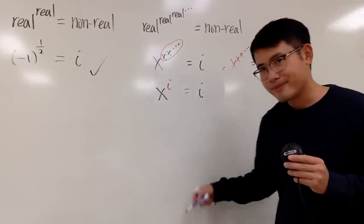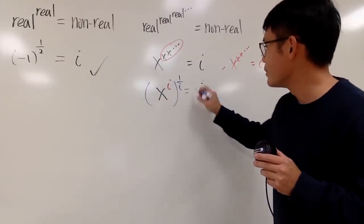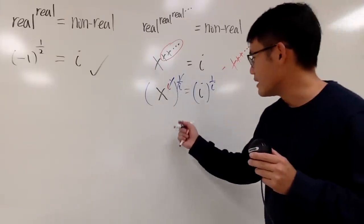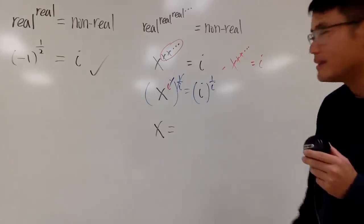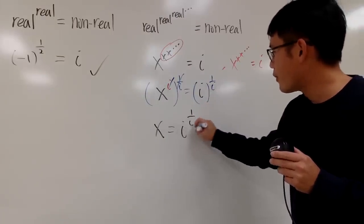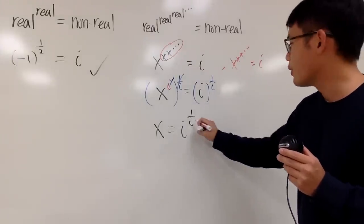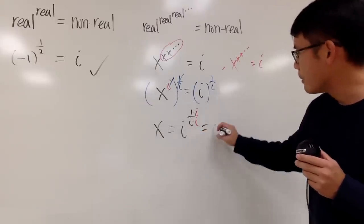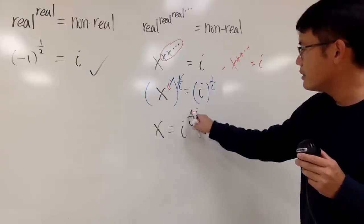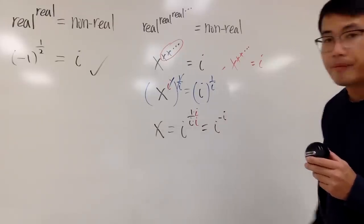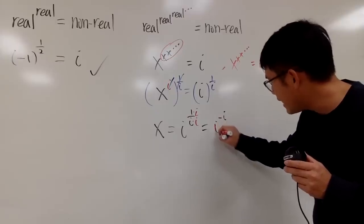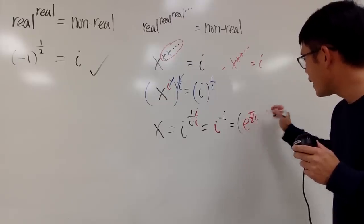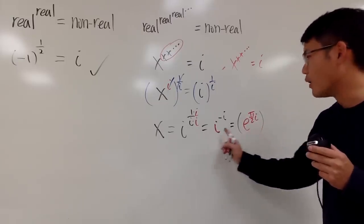We need to solve x to the i equals i. Raising both sides to the one-over-i power cancels the i on the left, giving x by itself. So x equals i to the one-over-i power. I want i in the numerator, so multiplying i and i in the exponent gives us i to the negative-i power. Now I'll express i in polar form: i equals e to the pi-over-2 times i.